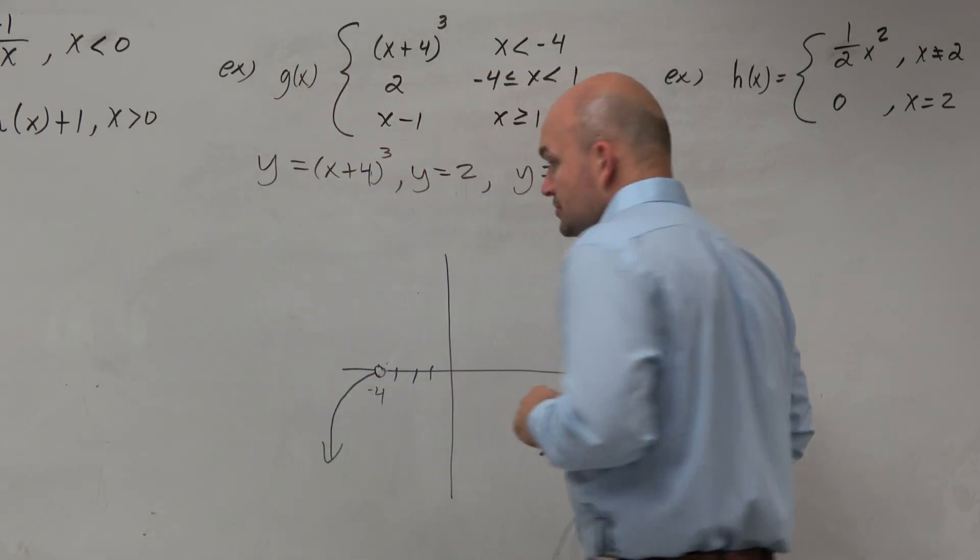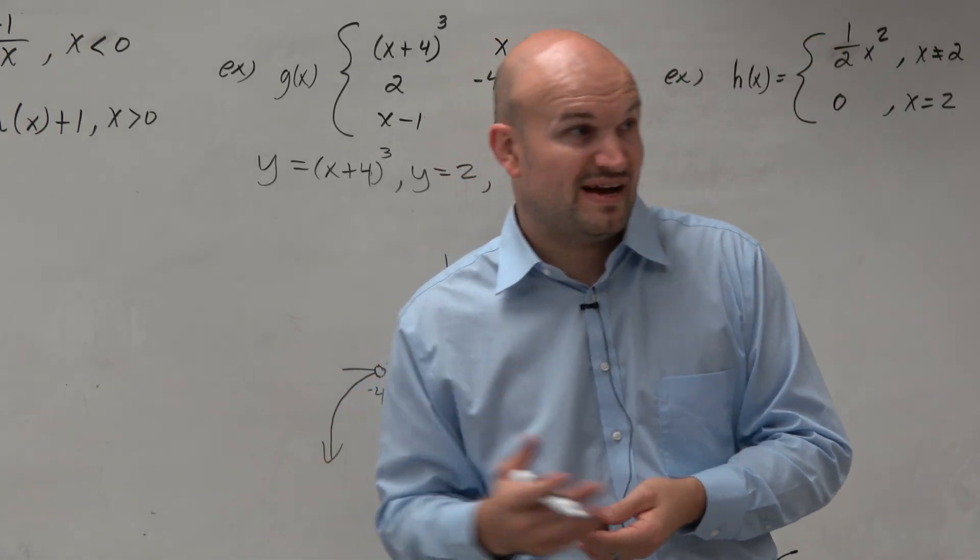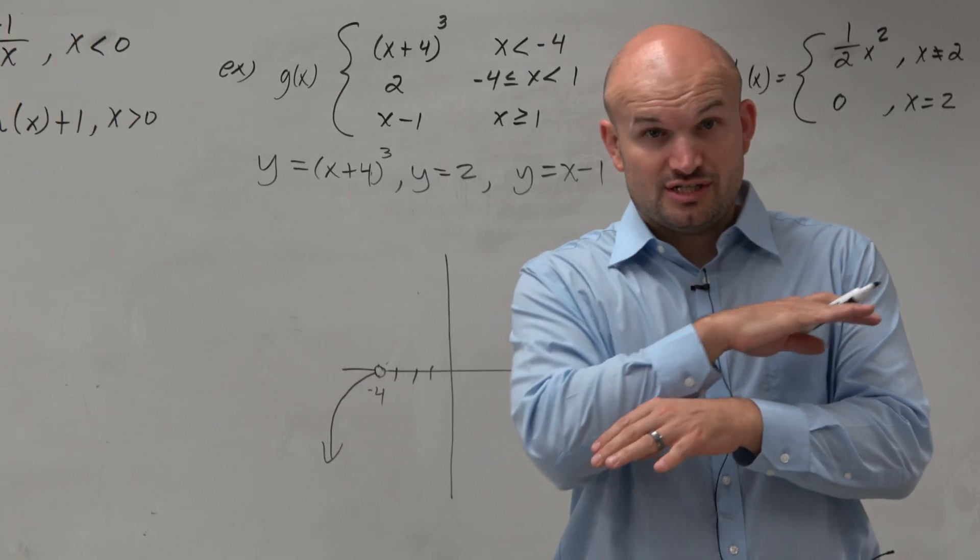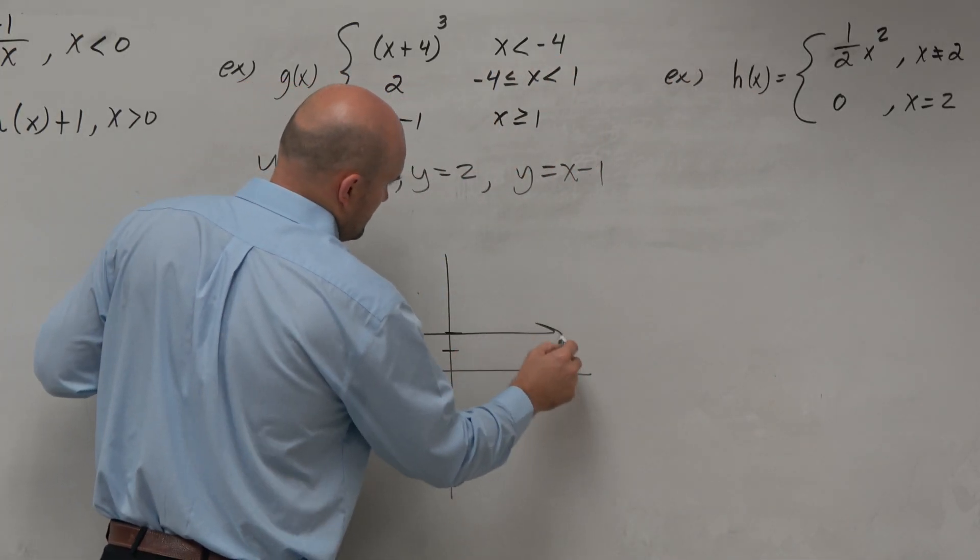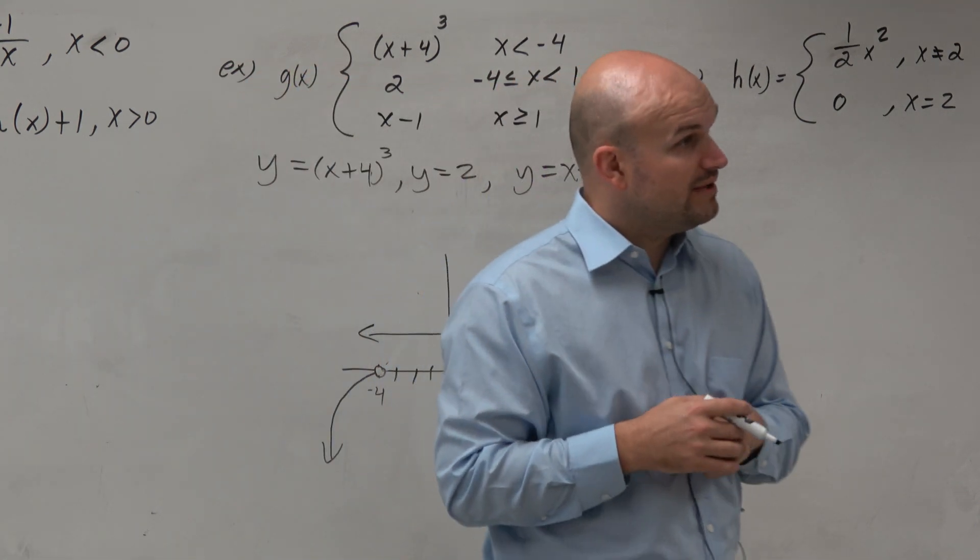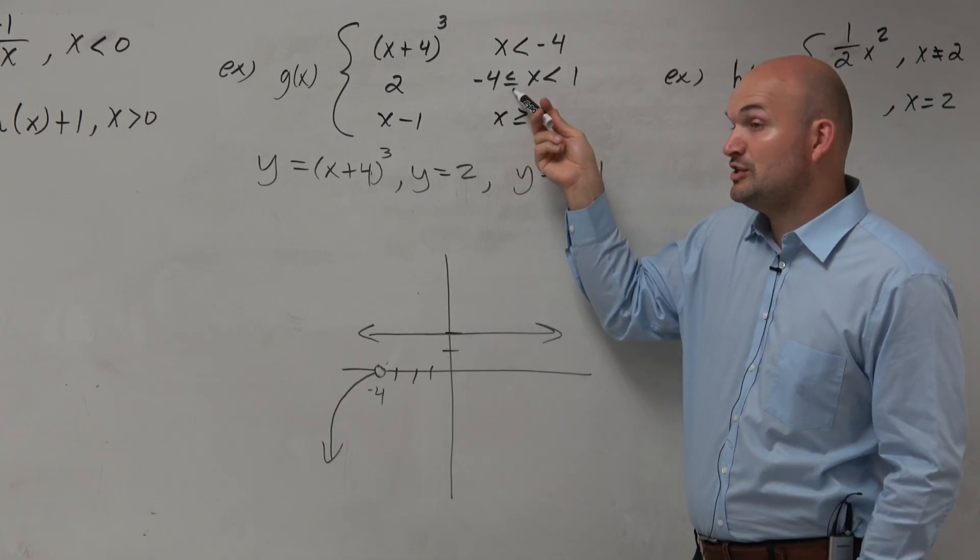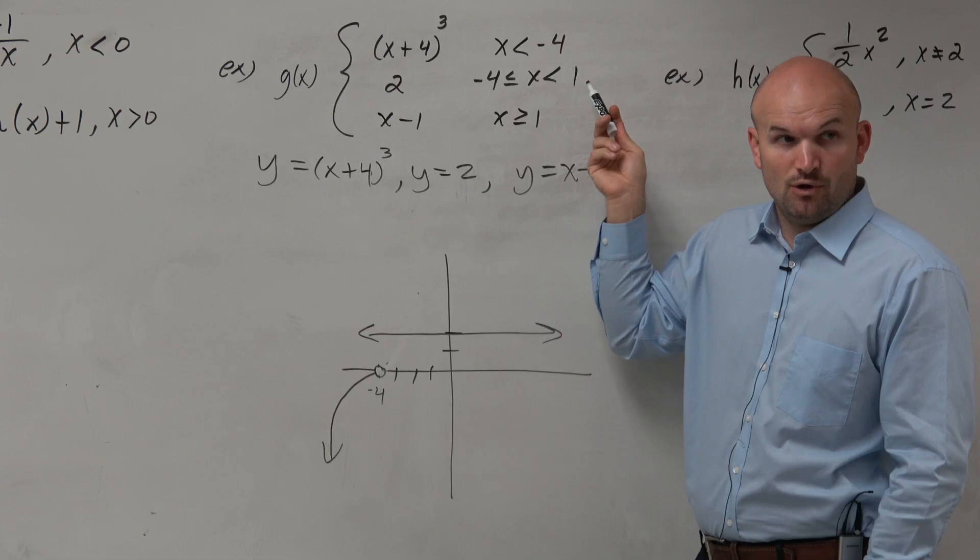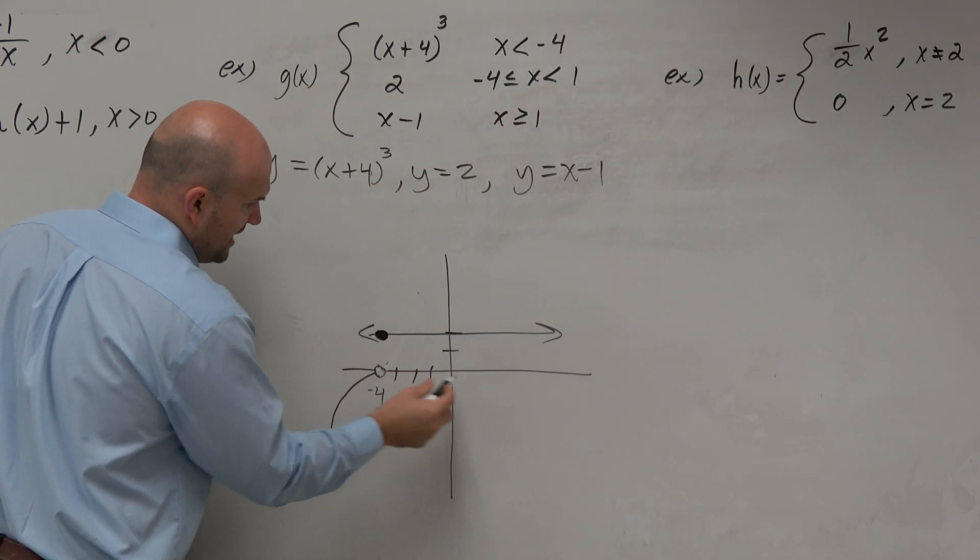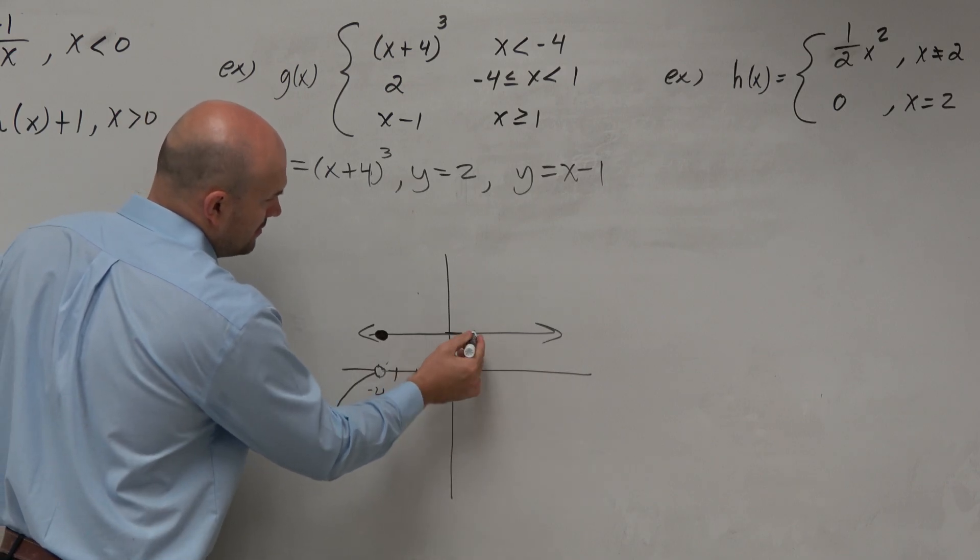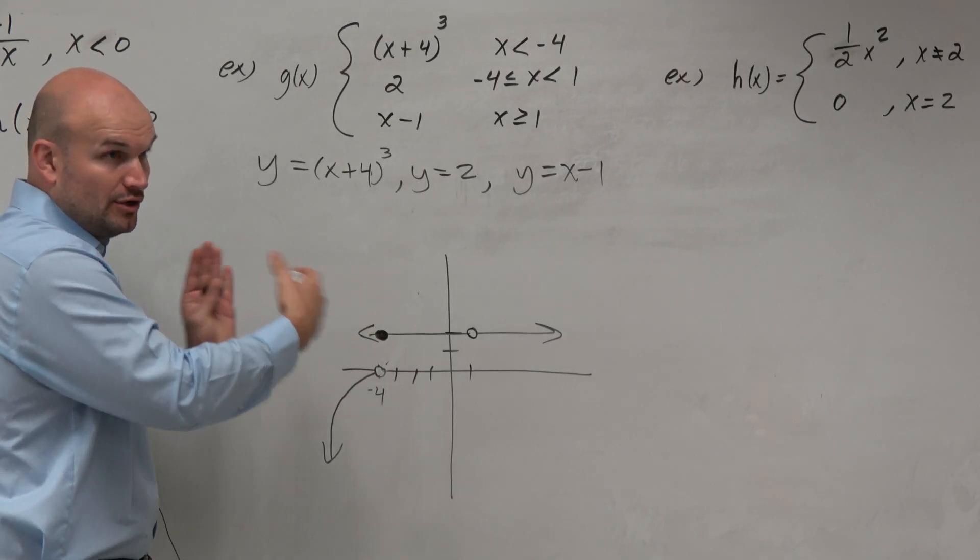Now we move to the next one, y equals 2. Well, guys, whatever x is, if x equals 1, y equals 2. If x equals negative 10, y equals 2. So it's just a horizontal line at y equals 2. However, we have a restriction on the domain. The restriction on this domain is all the values in the domain have to be greater than or equal to negative 4, but less than 1. So it can be greater than or equal to negative 4, but it has to be less than positive 1. So anything that's not in that domain, we're going to erase.